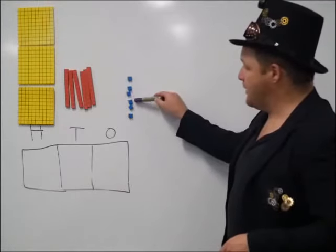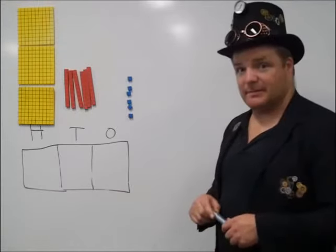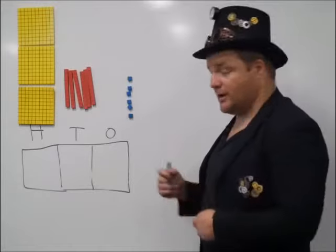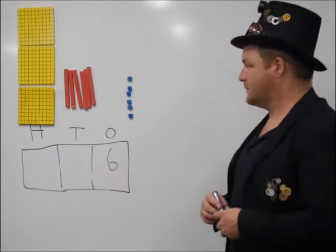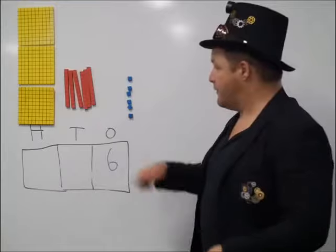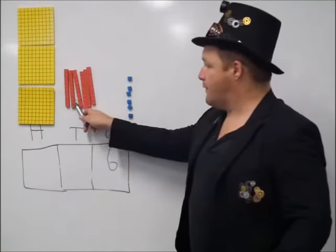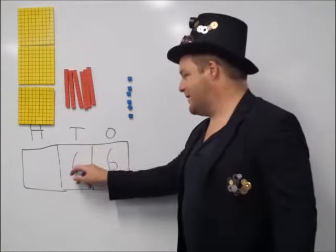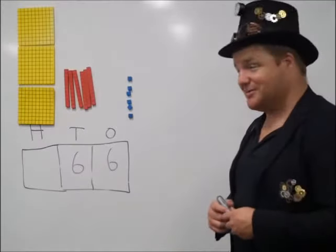We have one, two, three, four, five, six. So we have six ones. How many tens do we have? One, two, three, four, five, six. Oh, I have six of them. I promise you that wasn't intentional. Okay?